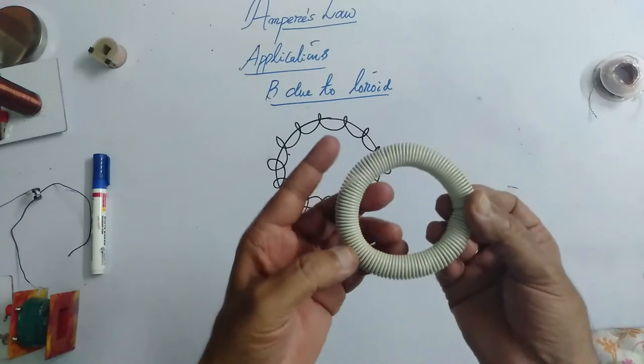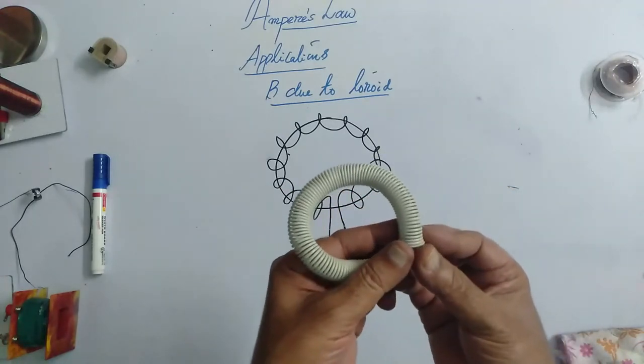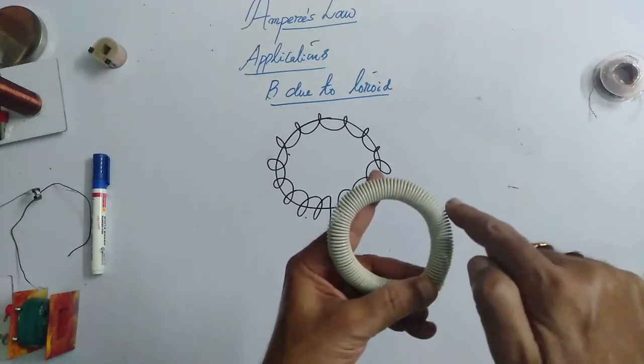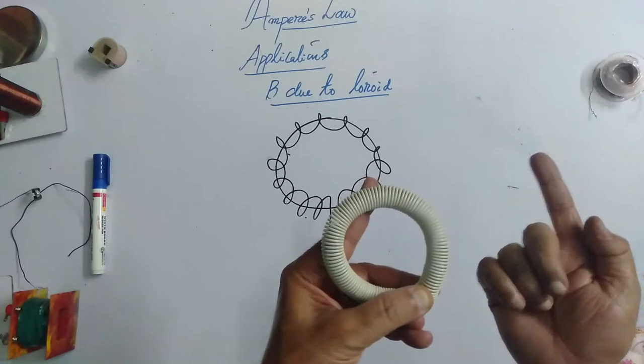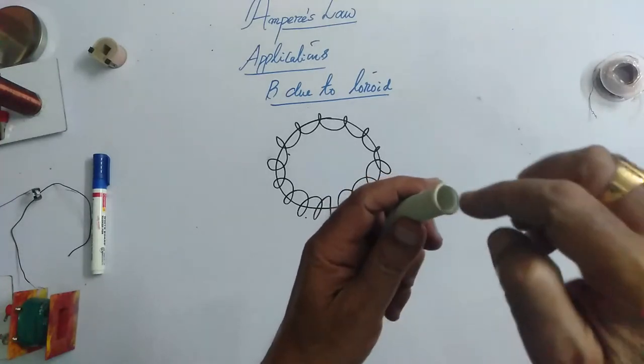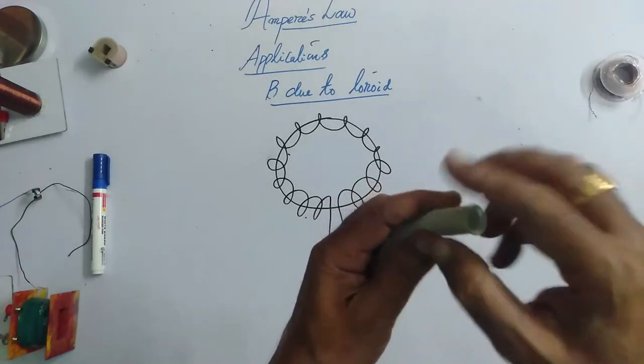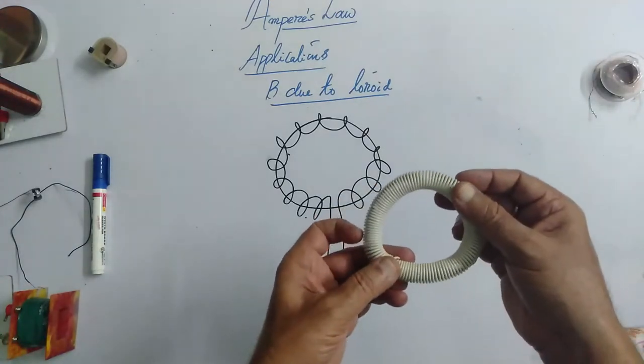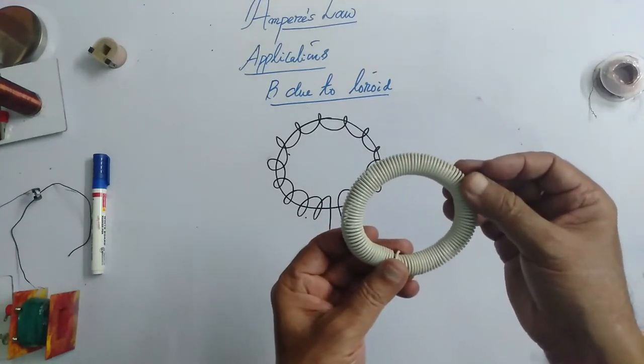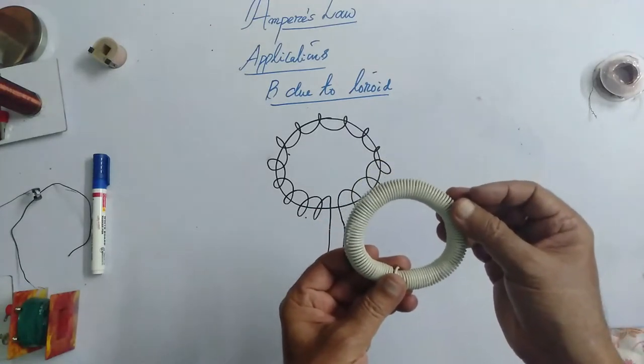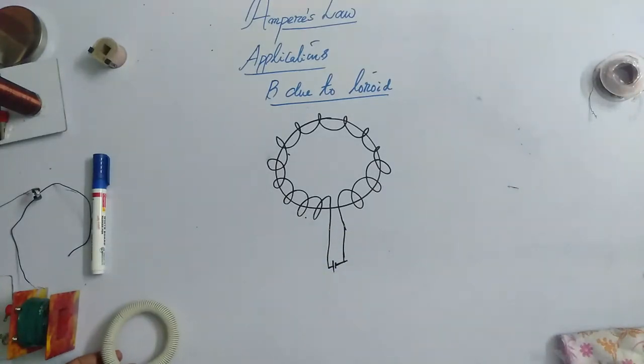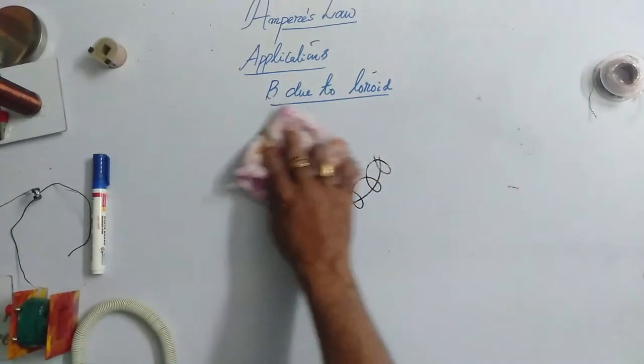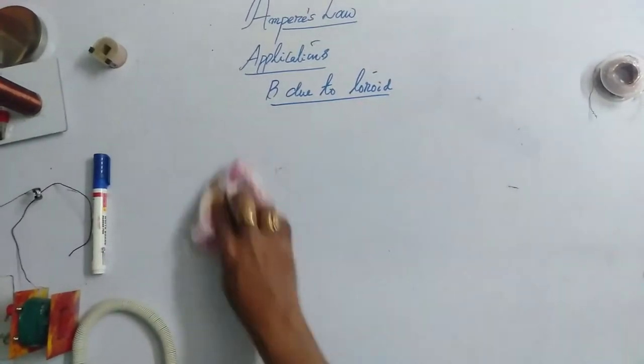Now, here, when the current is allowed, you can observe one inside portion, the second one outside the solenoid, third within the solenoid. So, three regions we are going to consider and we will see what is the magnetic field in all the three regions. So, for that, let me draw a diagram which will convince you clearly.